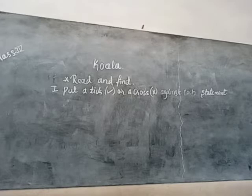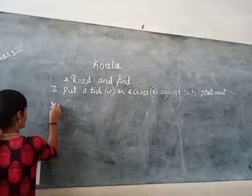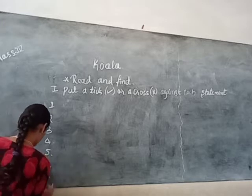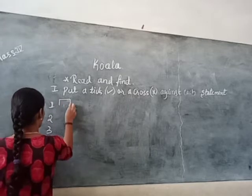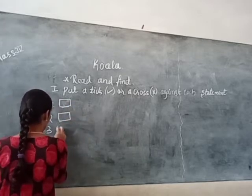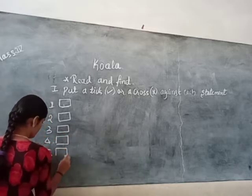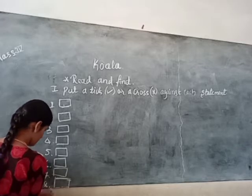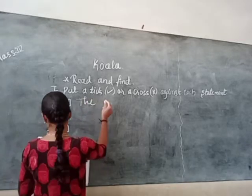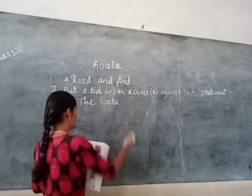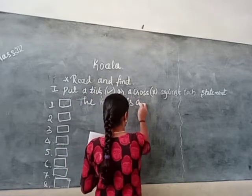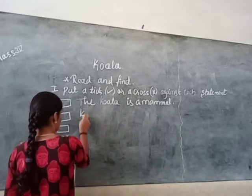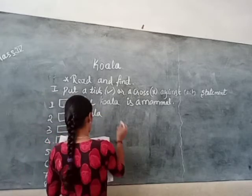Let us see what is the first statement. Let us write all the statements on the board. The second statement is: the Koila is a mammal. The second statement is: the Koila feeds all night.